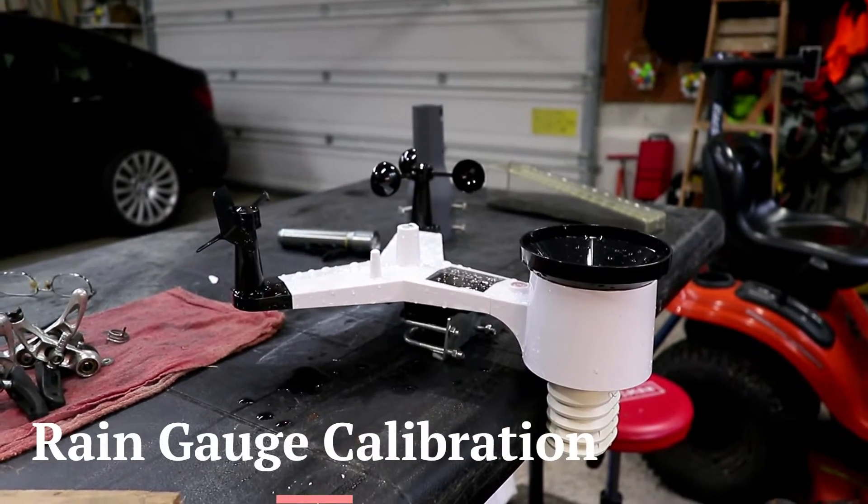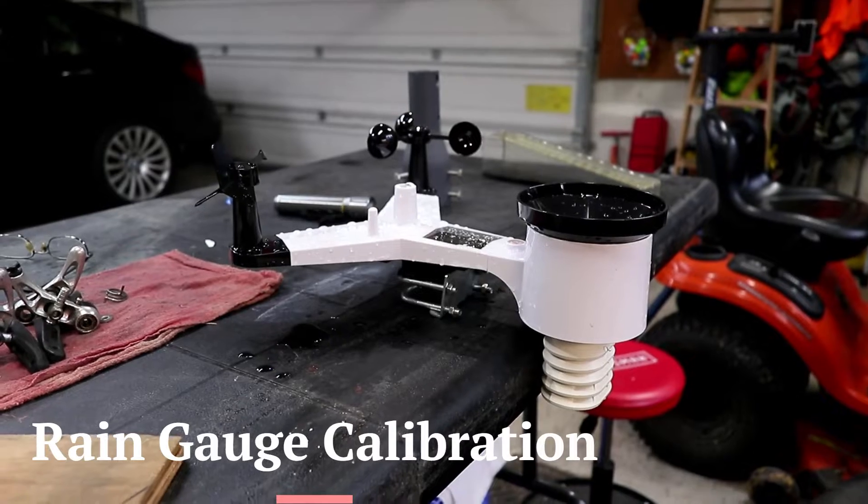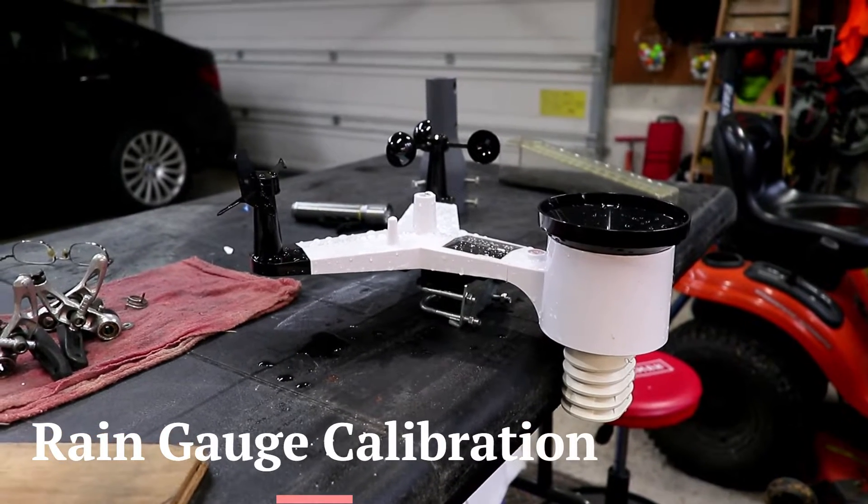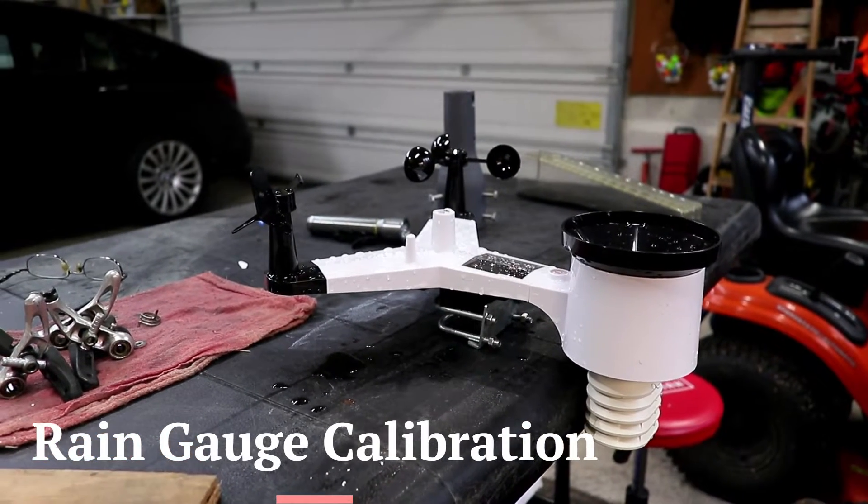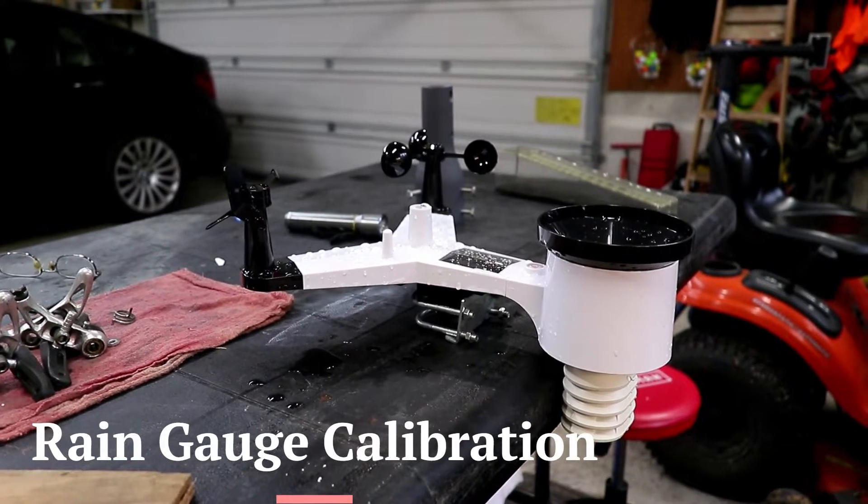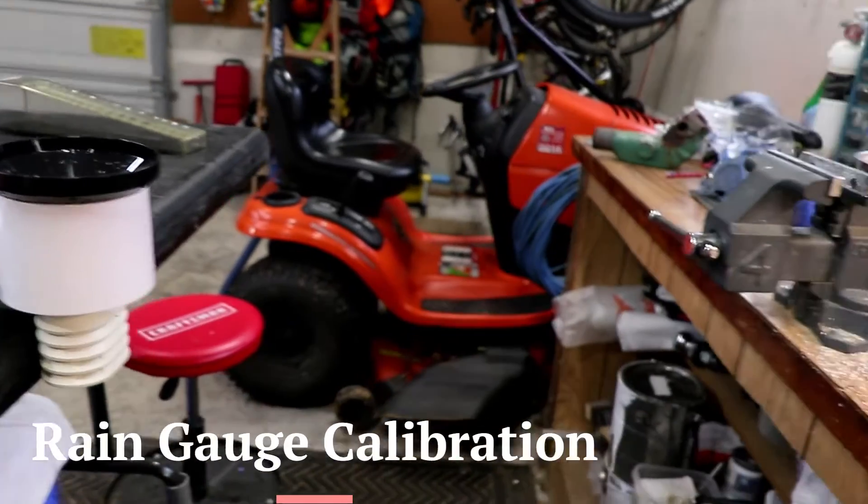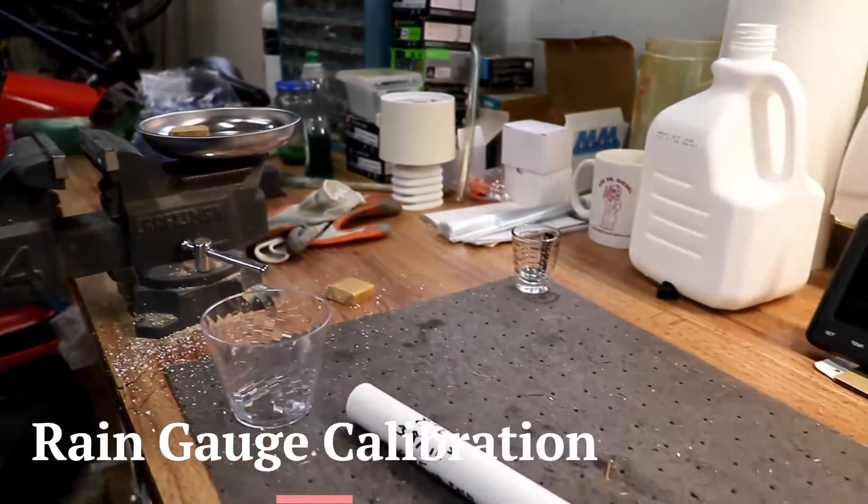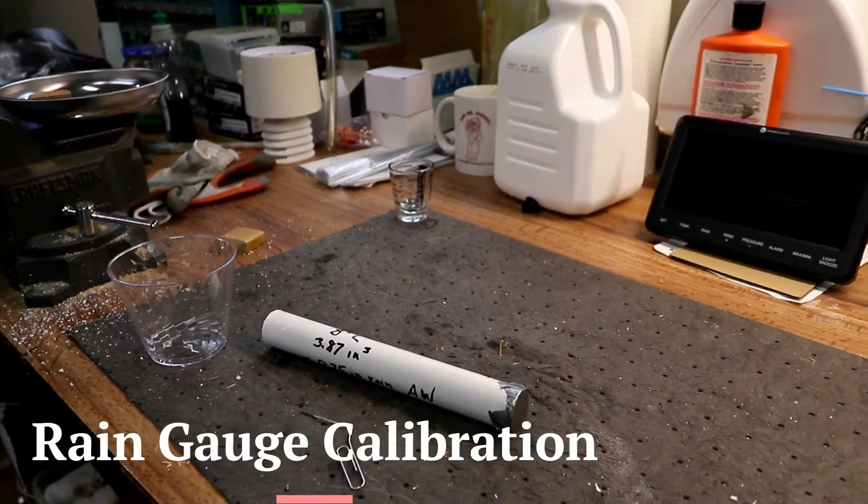Ever since I got this ambient weather rain gauge, I've been wondering just how accurate the rain volume is. I've looked through various sources and finally came up with an idea that we can calculate the amount of rain that falls into the rain gauge.